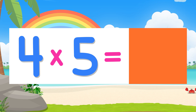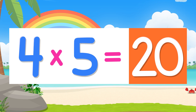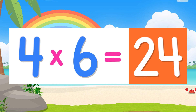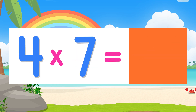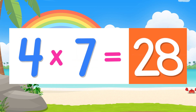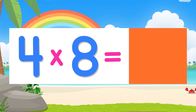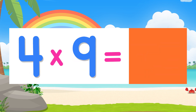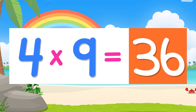Four times five is twenty. Four times six is twenty-four. Four times seven is twenty-eight. Four times eight is thirty-two. Four times nine is thirty-six.